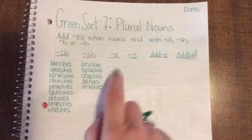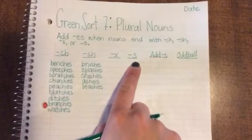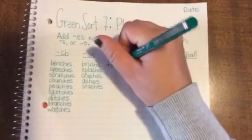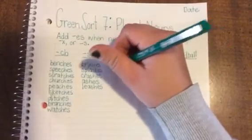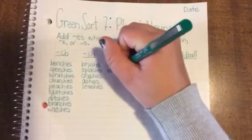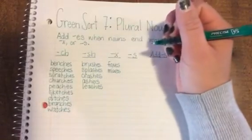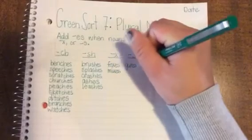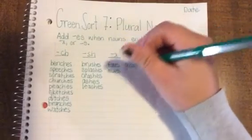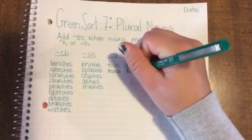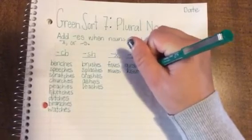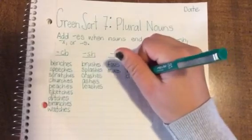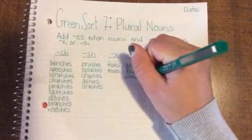And again, this rule also applies to singular nouns that end with X and that end with S. So, for example, fox becomes foxes, and mix becomes mixes. Guess becomes guesses. Kiss becomes kisses. And class becomes classes.